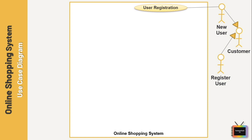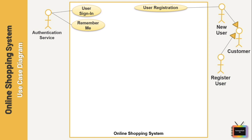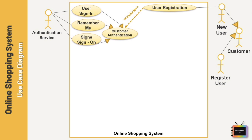A new customer will first register on the online shopping website or app, and at the time of registration we need to authenticate the customer. For that I am adding an actor Authentication Service. We can authenticate using normal sign-in, save credentials with a remember-me method, or use single sign-on. I am adding an include relationship from User Registration to Customer Authentication, because include is used when a use case is mandatory and part of the base use case. It is represented by a dashed arrow pointing toward the included use case with the notation «include». A user cannot register without authentication, which is why the include relation is used here.